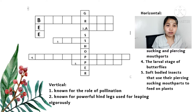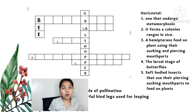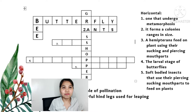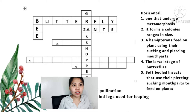First: one that undergoes metamorphosis. Absolutely — butterfly. A four-letter word that forms a colony, ranges in size. Very good — ants. Number 3: a hemipterans that feeds using sucking and piercing mouth parts. Correct — bugs.